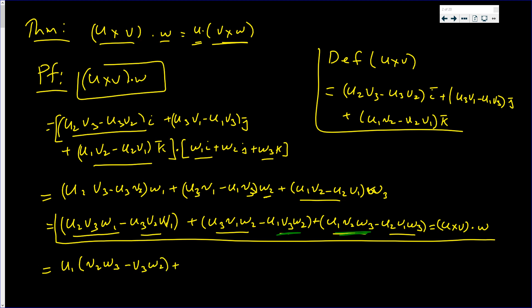Plus, then I'll do the same with u2. This has u2 and then over here I have u2, so it can be factored out. u2 times v3 w1 minus v1 w3.